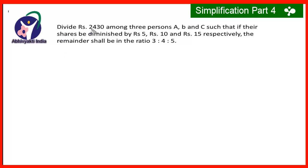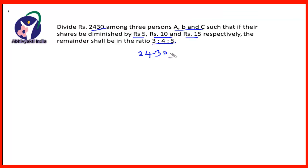Divide Rs. 2430 among A, B and C such that if their shares are diminished by Rs. 5, Rs. 10 and Rs. 15 respectively, the remainder shall be in the ratio 3 is to 4 is to 5. From the total amount Rs. 2430, the total subtracted is 5 plus 10 plus 15, which is 30. Therefore the remaining amount is 2400, and this is divided in the ratio 3 is to 4 is to 5.